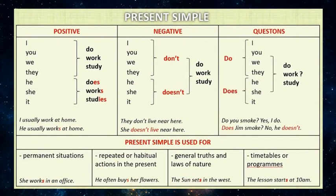Before we do another exercise, we should review present simple, past simple, and present continuous. The present simple is a verb tense used to show repetition, habit, or generalization. Present simple has three forms: positive, negative, and question. In the third person singular, like he or she, we add -s or -es to the verb. For example: I do, she does. In the negative form we use don't and doesn't. For example: I don't do, she doesn't do. In questions we use do and does before personal pronouns. For example: Do I do? Does she do?